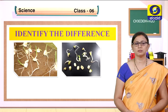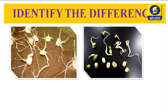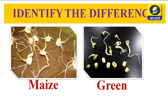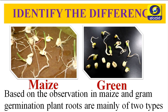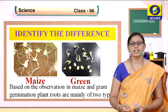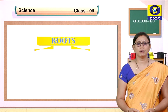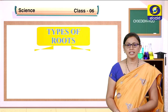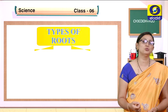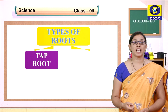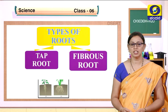Children, identify the difference. By seeing this picture, you can recall the germination of seeds from the first chapter — maize and green gram. Based on the observation of maize and gram germination, plant roots are mainly of two types. We have a tap root system as well as a fibrous root system.